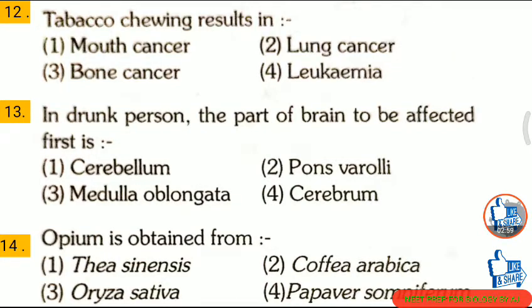Question 12: Tobacco chewing results in — first, mouth cancer; second, lung cancer; third, bone cancer; fourth, leukemia. The correct answer is option 1: mouth cancer.